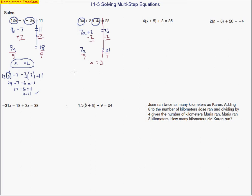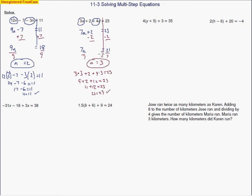Let's substitute 3 back in to make sure we're getting the right answer: 3 times 3 plus 2, plus 4 times 3 equals 23. So I get 9 plus 2, and 4 times 3 makes 12, equaling 23. Adding gives me 11 plus 12, and sure enough, 11 and 12 do give me 23. That's the nice thing about doing these problems — you know you have the right answer if you check your work.